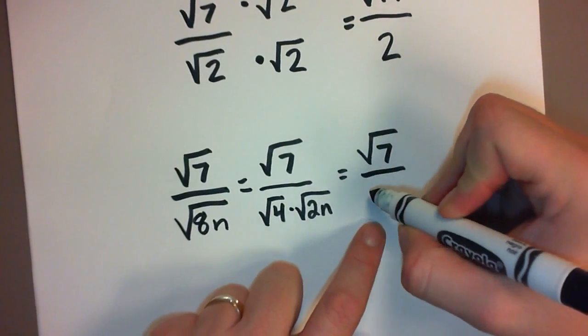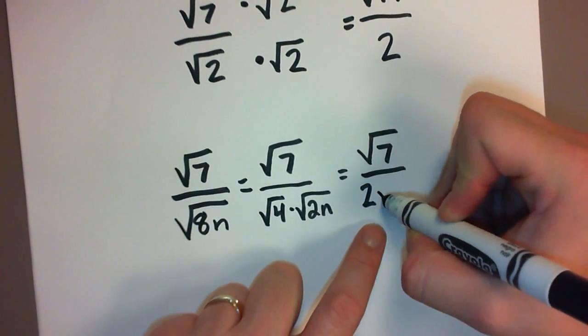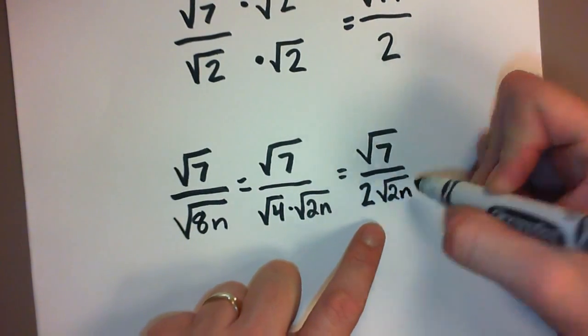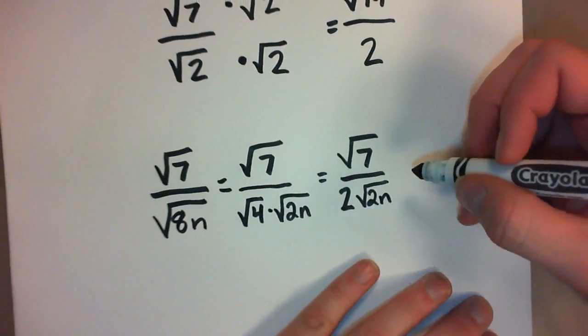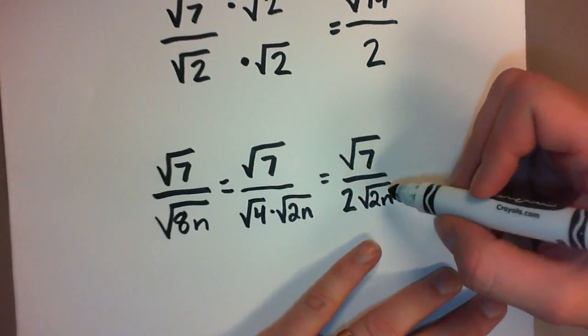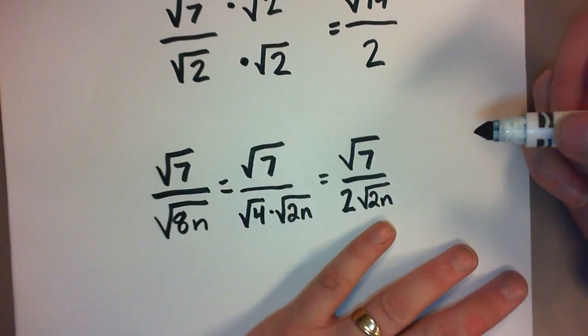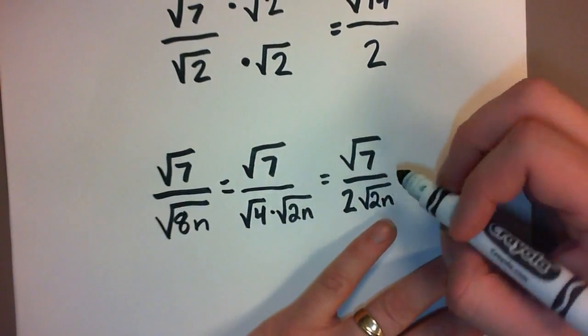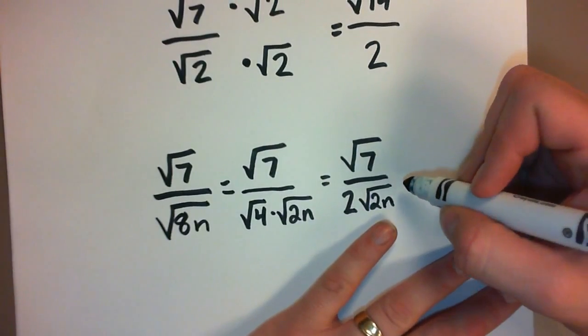So I'm going to write this as the square root of 4 times the square root of 2n, and what's the square root of 4? Why, it's 2. So this is the same as the square root of 7 over 2 times the square root of 2n. Now what we have is a radical expression, it's simplified but it's still got an irrational denominator.